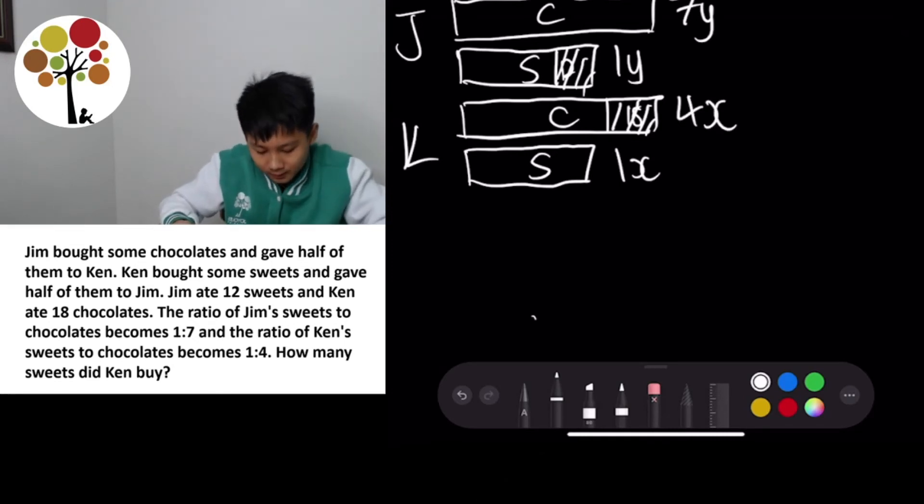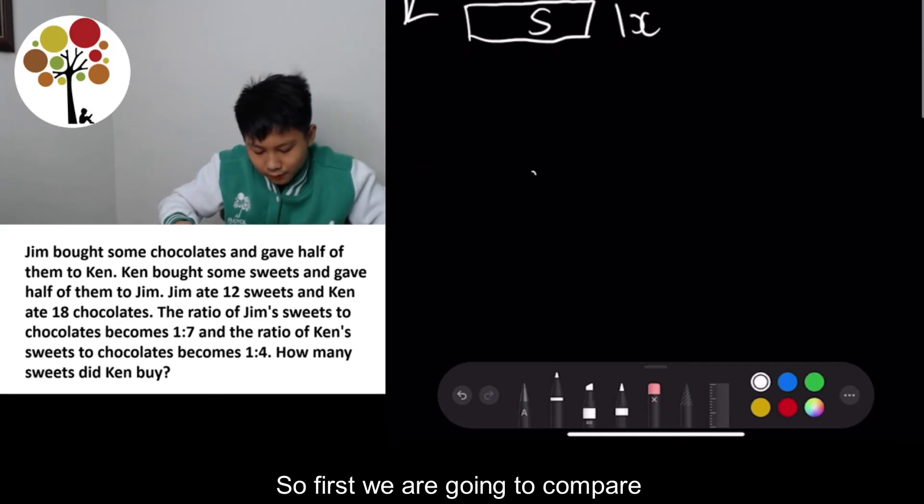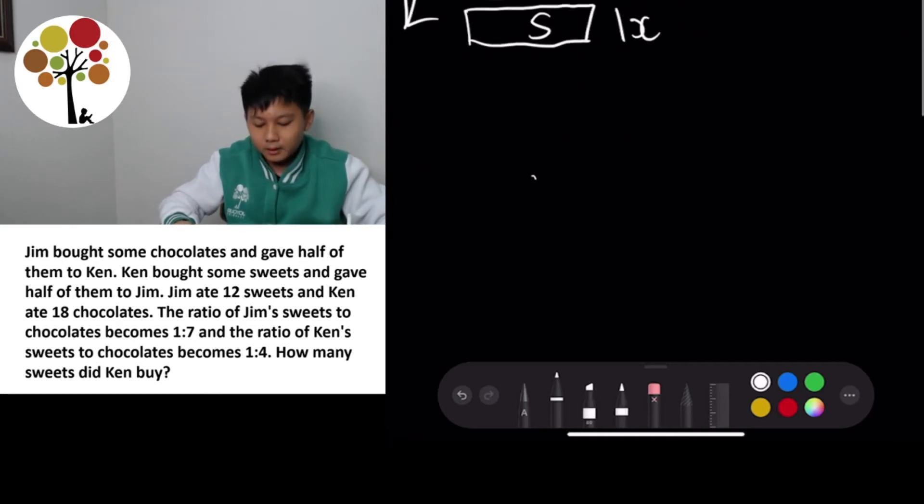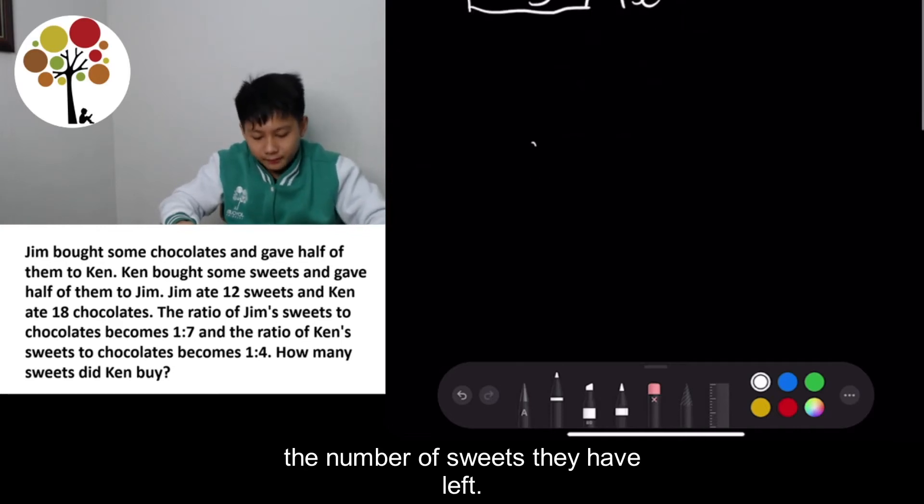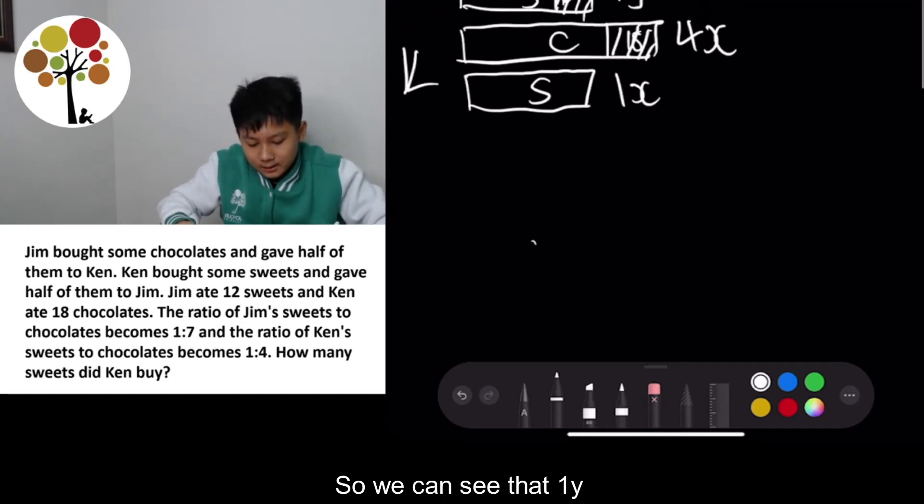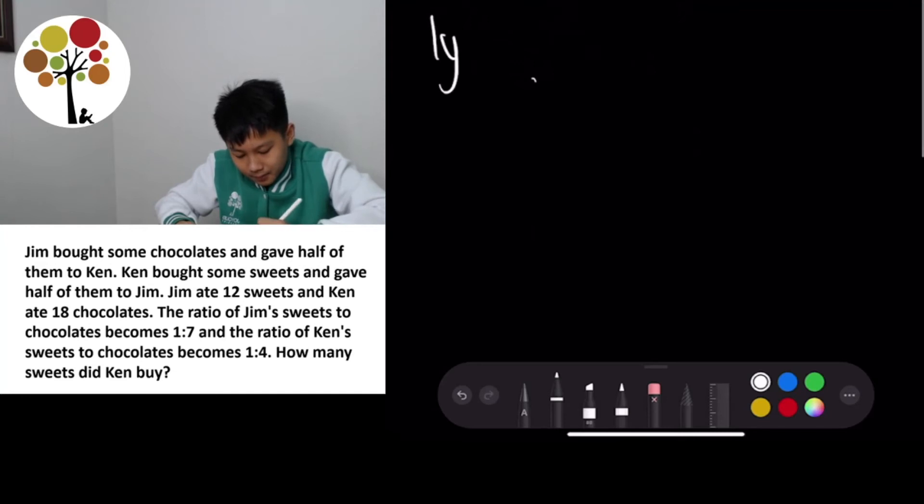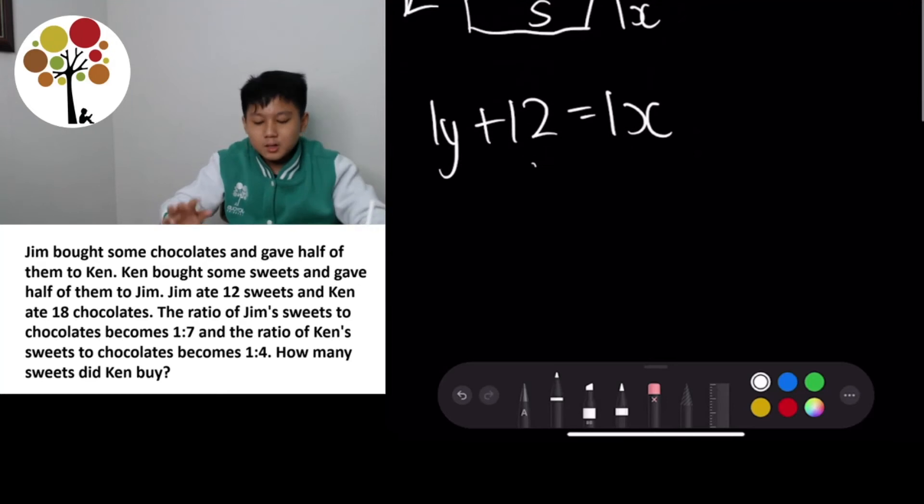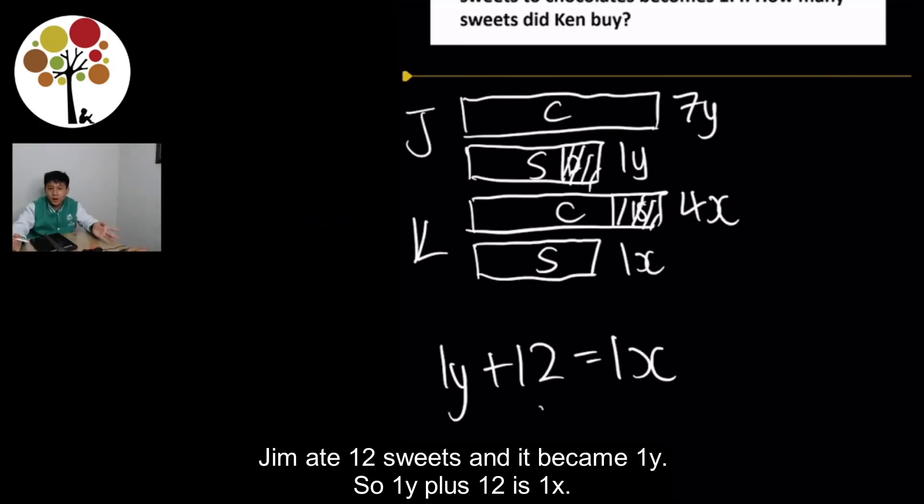Okay. Now, how many sweets did Ken buy? So first, we are going to compare the number of sweets they have left. So we can see that 1Y plus 12 is equal to 1X because Jim ate 12 sweets and it became 1Y. So 1Y plus 12 is 1X.